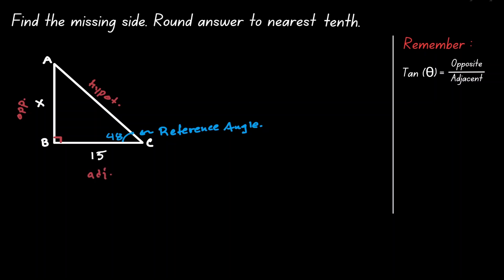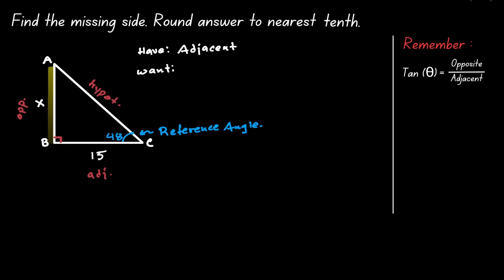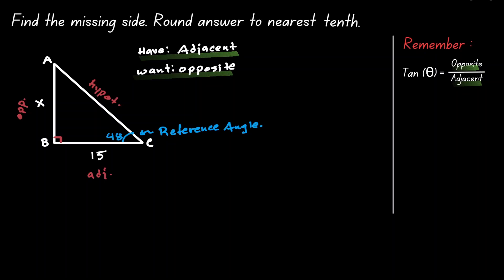Now we can think about what we have and what we want. We have the value of the adjacent, and we want the value of the opposite. Remembering that tangent is defined as the ratio between opposite and adjacent, the numerator in the ratio is what we want, and the denominator is what we have.